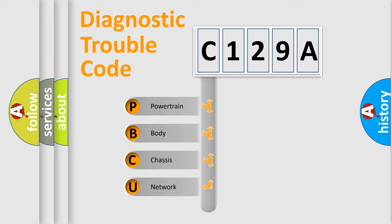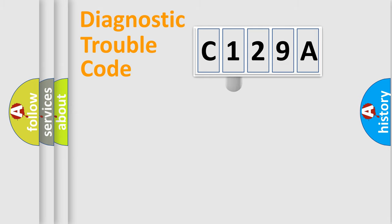We divide the electric system of automobile into four basic units: Powertrain, body, chassis, and network. This distribution is defined in the first character code.